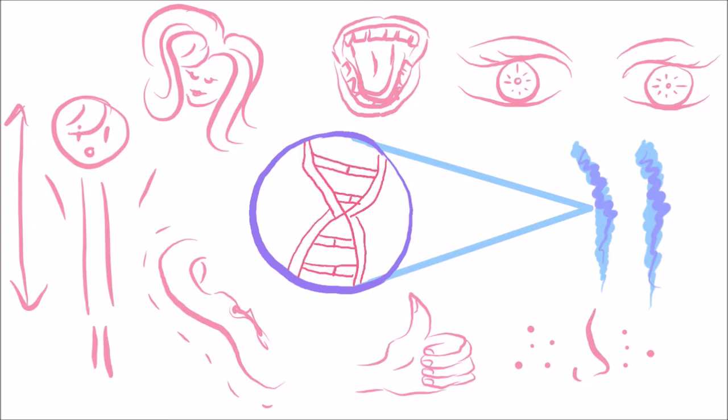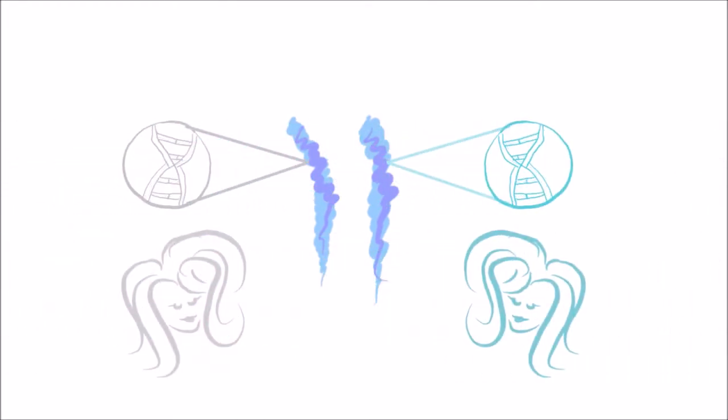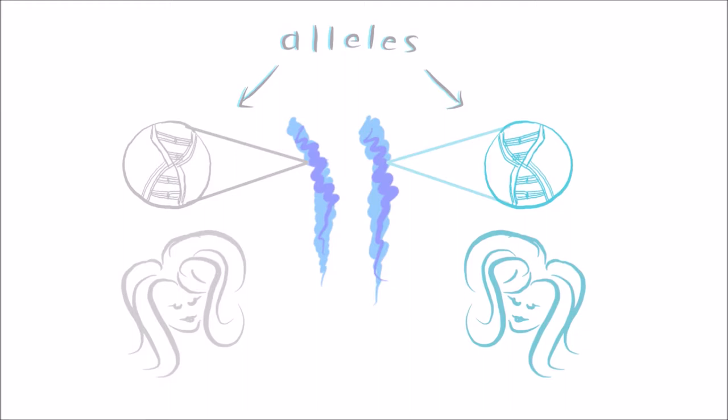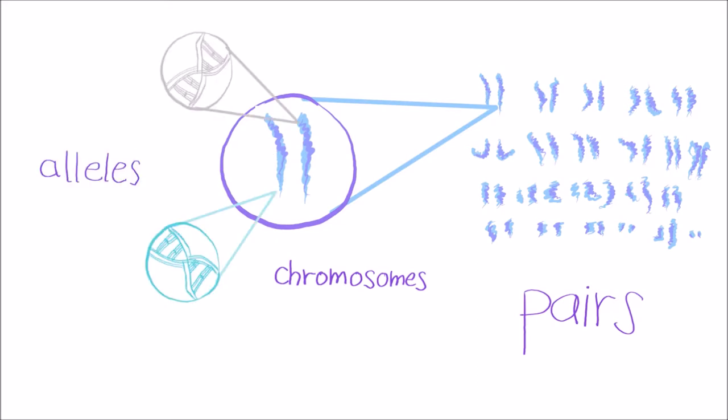But wait. Chromosomes come in pairs. That means you have two genes that code for a single trait. That's right. And they're called alleles. So, to recap, you have pairs of chromosomes, which have genes. Variations of a gene are called alleles.